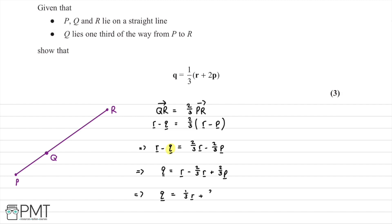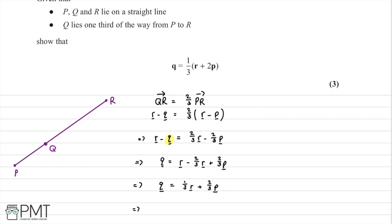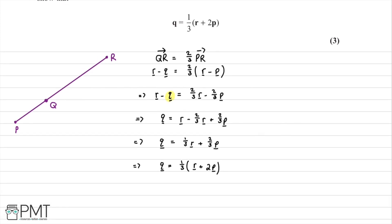Tidying up, we have two R terms: one minus two thirds equals one third, so we have one third R, then we add on two thirds P. Taking out a common factor of one third, that leaves us with Q equal to one third times R plus two P, which matches the required answer.